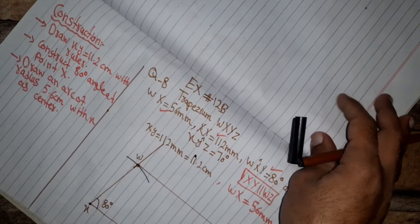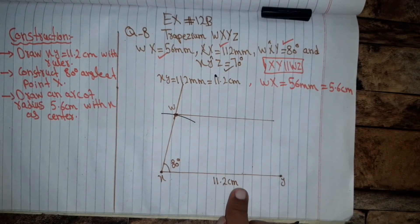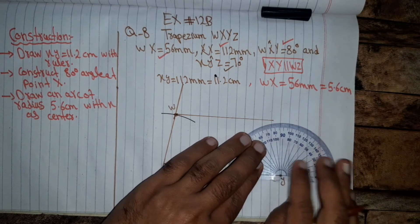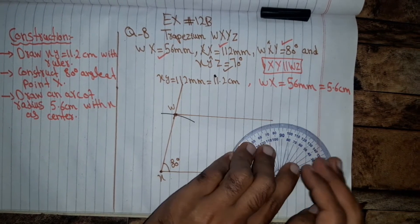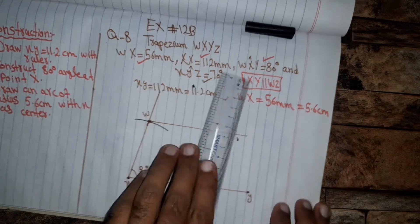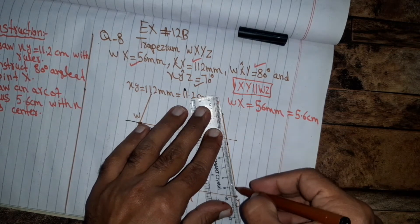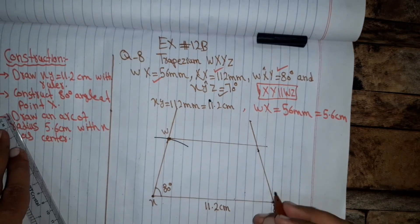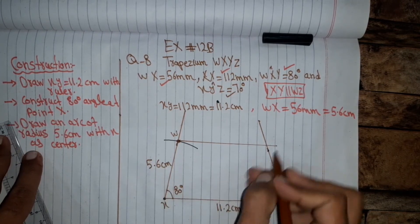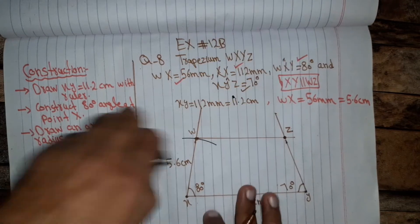Now we will construct the angle which is given. So we'll construct 70 degree angle at point Y. 70 degree angle at point Y. So this is 70 degree line. This is 5.6 centimeters. Now this is point W, X, Y and Z. Here we write steps for construction.